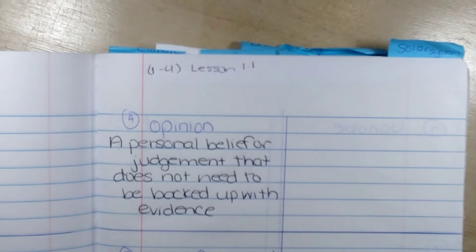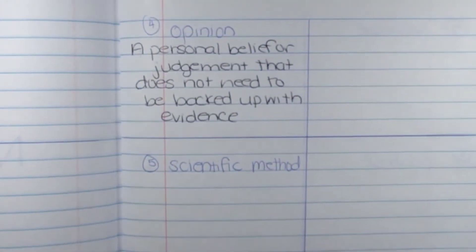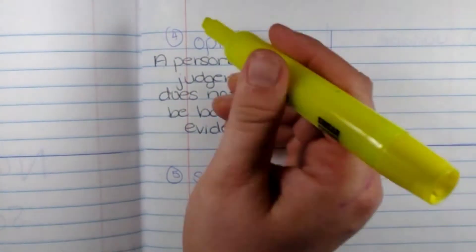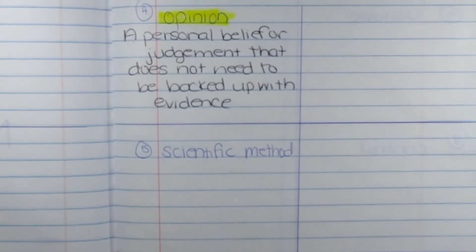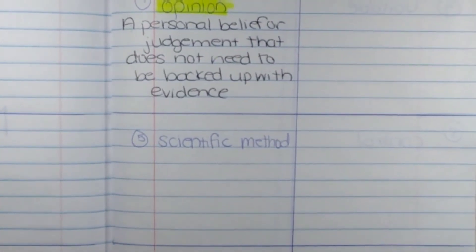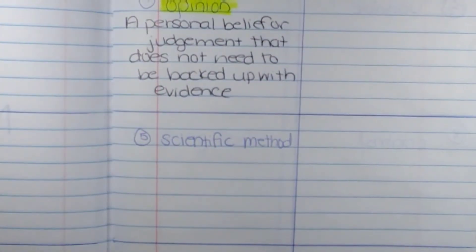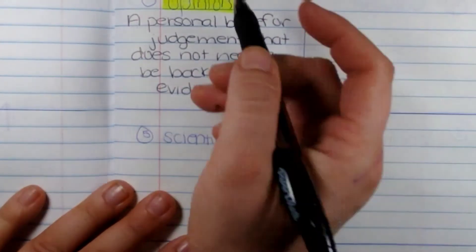So, the next one is scientific method, and that will be a different lesson. Okay, so number five, six, seven, and eight are lesson 1.3.